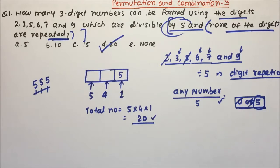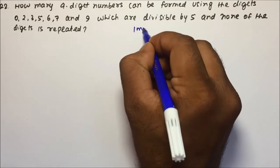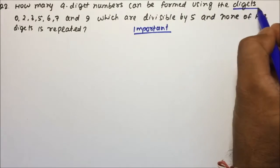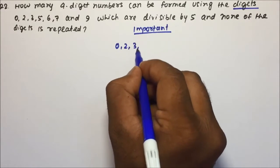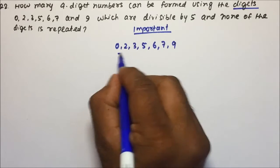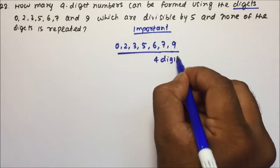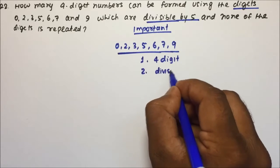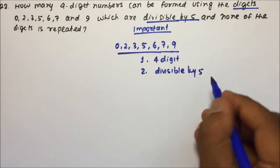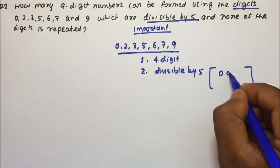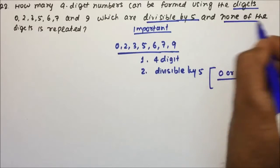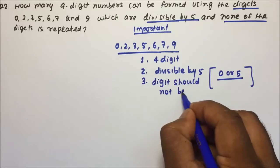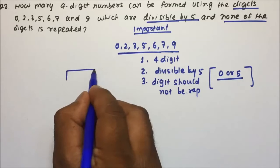Moving towards question number 2. How many 4-digit numbers can be formed using the digits 0, 2, 3, 5, 6, 7, and 9, which are divisible by 5 and digits are not repeated? Now, if any number is divisible by 5, the last digit should be 0 or 5. We have two cases — ending with 0 or ending with 5 — because a 4-digit number cannot start with 0.